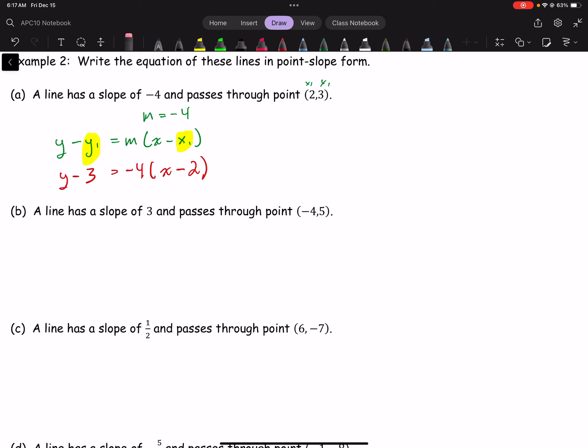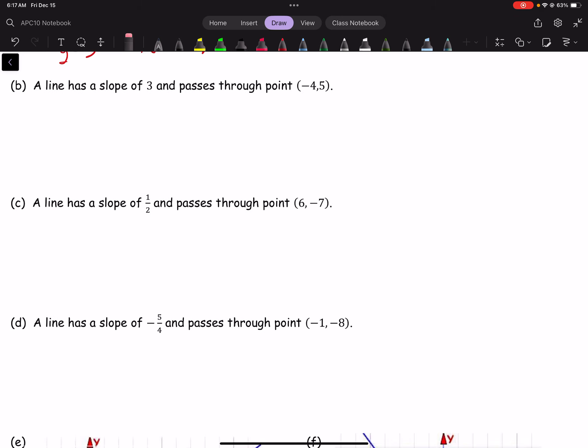Alright, line has slope of 3, goes through point negative 4, 5. Let's just do this. So m equals 3. This is my point. So I'm just going to write point negative 4, 5. So if I have y minus y1 equals m times x minus x1, I'm just going to plug in my values.